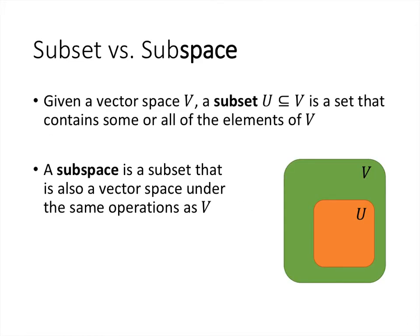There's an important distinction between a subset and a subspace. A subset is simply a set that has some or all of the elements of V. You can imagine V as being a bubble and U as being a bubble inside that. But that's not enough for it to be a subspace. For U to be a subspace, U has to also be a vector space under the same operations that V has.